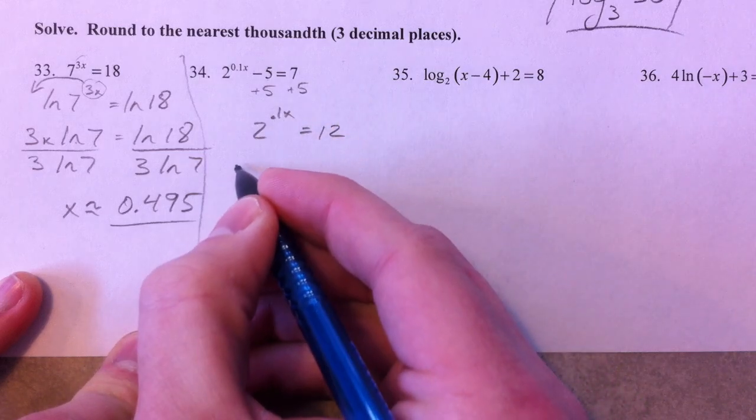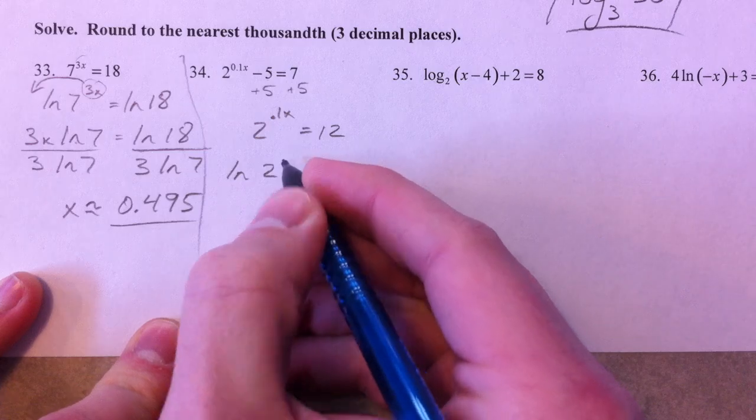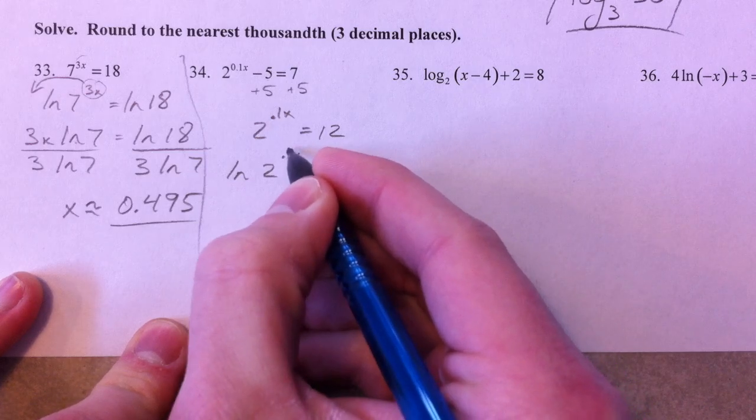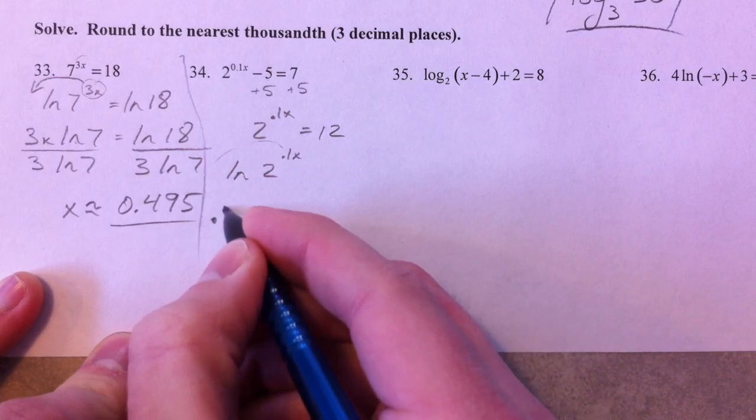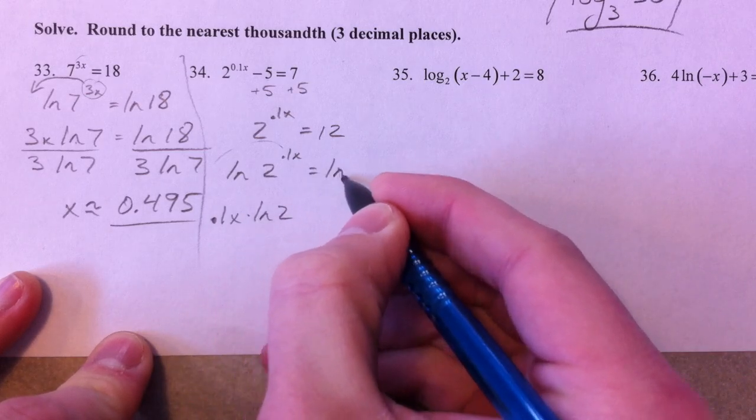Exponentials—what undoes exponentials? Logarithms. So, logarithm of 2 to the 0.1x. Again, that's going to come down in front. 0.1x times the natural log of 2 equals the natural log of 12.